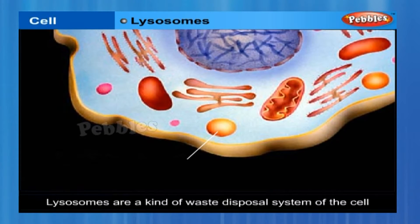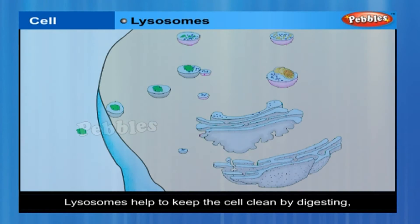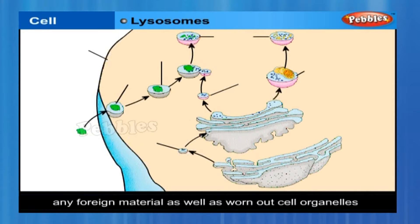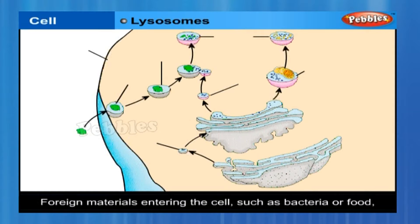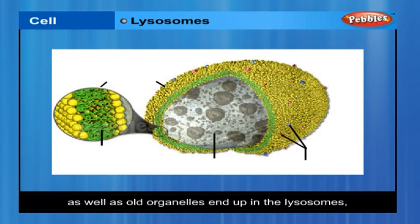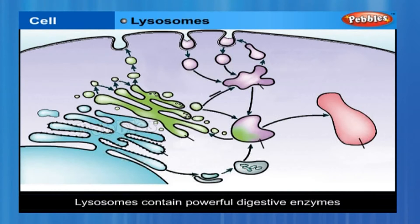Lysosomes are a kind of waste disposal system of the cells. They help to keep the cell clean by digesting any foreign material as well as worn-out cell organelles. Foreign materials entering the cell, such as bacteria or food, as well as old organelles, end up in the lysosomes, which break them up into small pieces. Lysosomes are able to do this because they contain powerful digestive enzymes capable of breaking down all organic material.